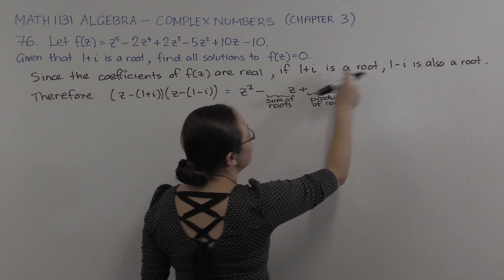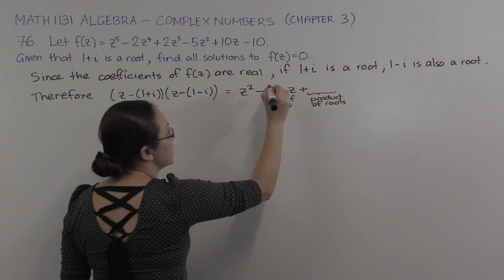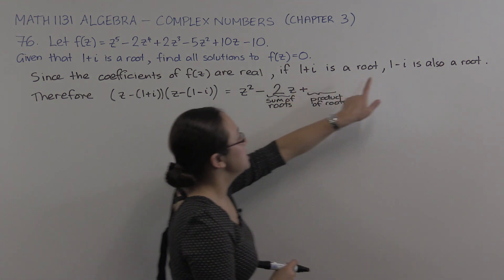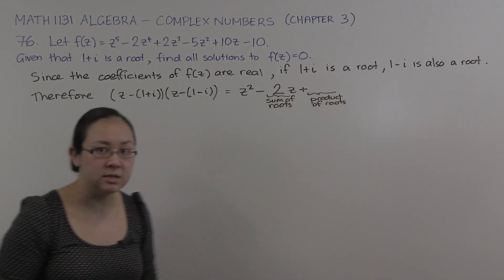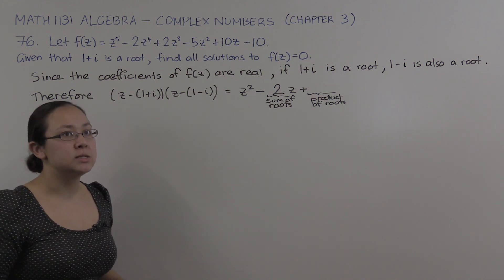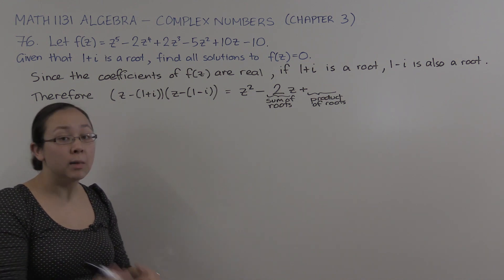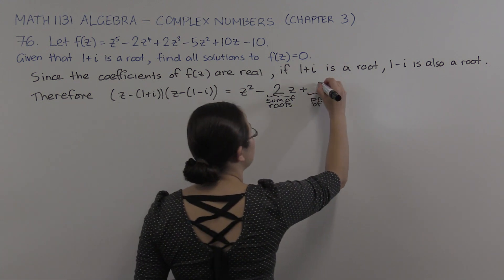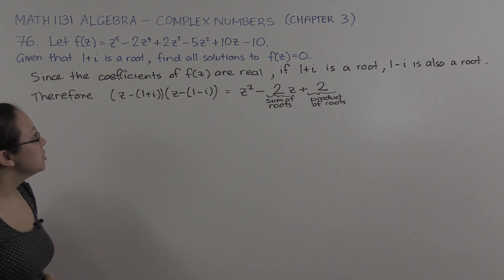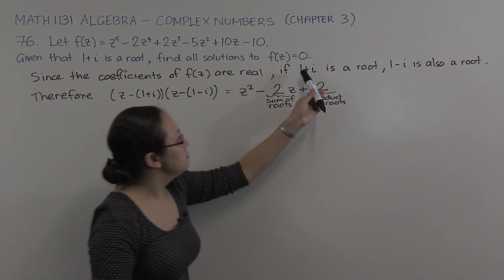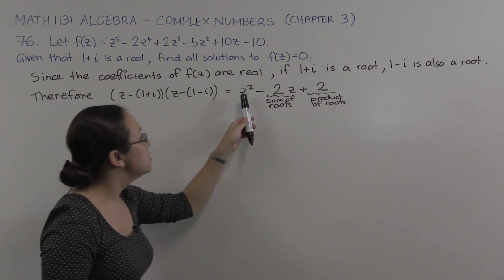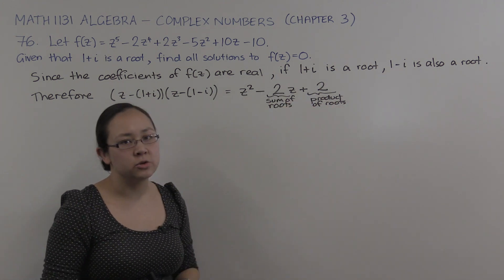In any case, the sum of the roots, 1 plus i plus 1 minus i, that's 2. The product of the roots, 1 plus i times 1 minus i, that gives us a difference of two squares. 1 squared minus i squared, that's 1 minus minus 1, that's 1 plus 1 which is 2. So that's the product of the roots. So if we know 1 plus i is the root, we know 1 minus i is the root because the coefficients are real. So we know z squared minus 2z plus 2 is a factor.